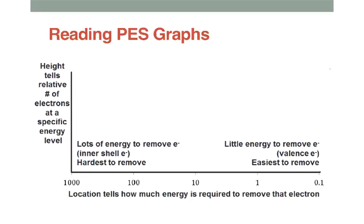When you read this, the height here tells you more or less the relative number of electrons at a specific energy level. And again, the ones over here take lots of energy to remove because they're close to the nucleus, and over here, these are a lot easier to remove.